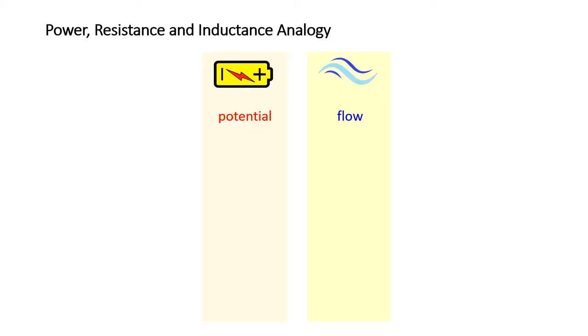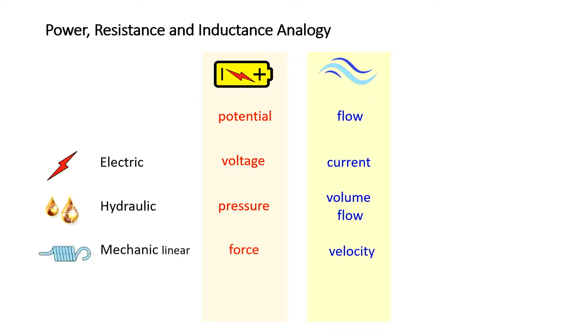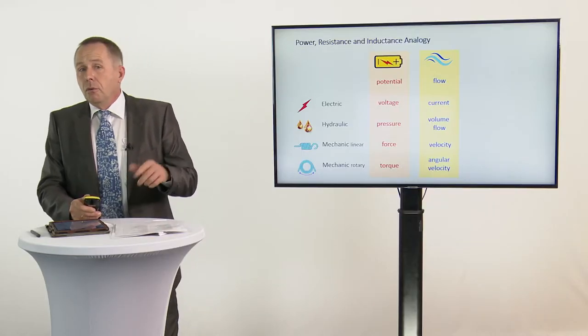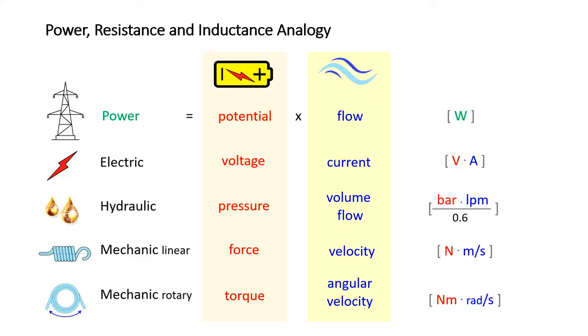For a better understanding of how a hydraulic will work, I will give you some idea about the analogy of driving technologies. Each driving technology uses a potential and a flow parameter. In electric, of course, there is voltage and current, but we have the same thing also in hydraulic. The voltage there is the pressure, and the current there is the volume flow. And also for linear or rotational mechanic, we have parameters like this: force and velocity and torque and angular velocity. If you want to have an idea of what is power in this driving system, you only have to multiply potential by flow. You can do this in each of those technologies, and at the end, you have about the same unit in each driving technology.